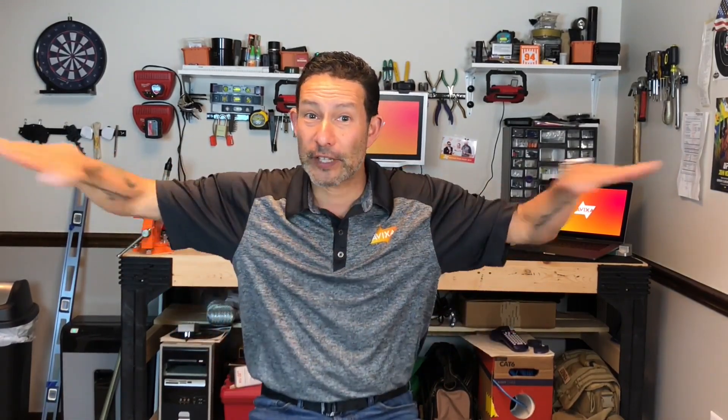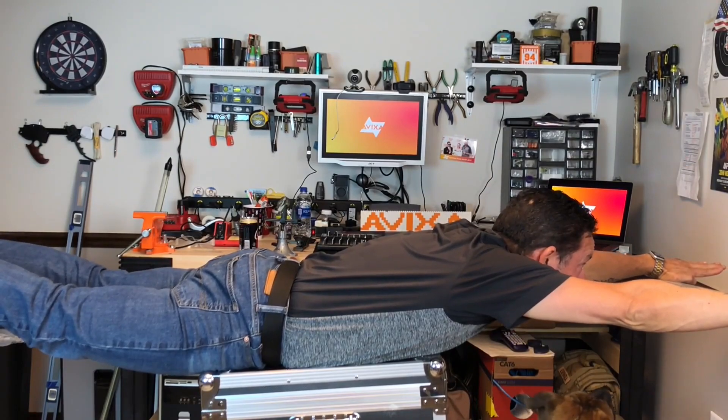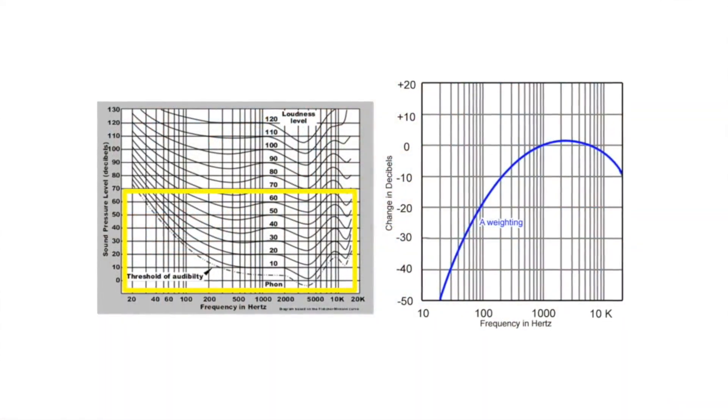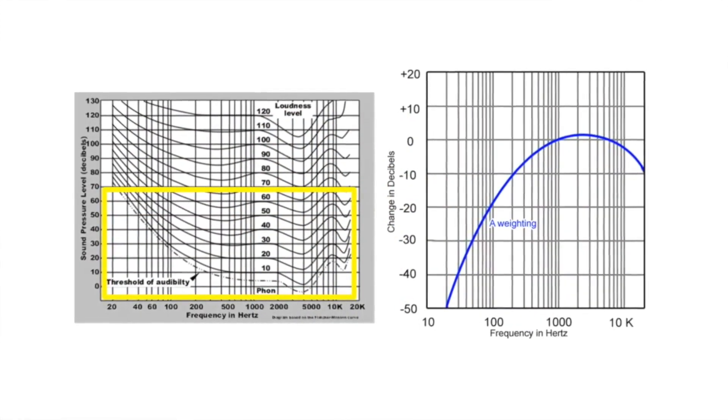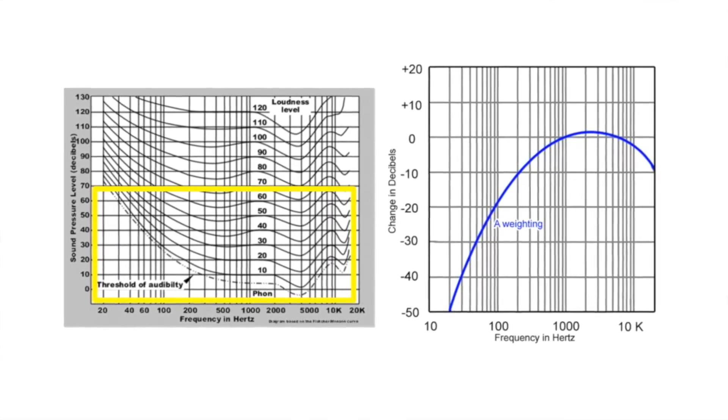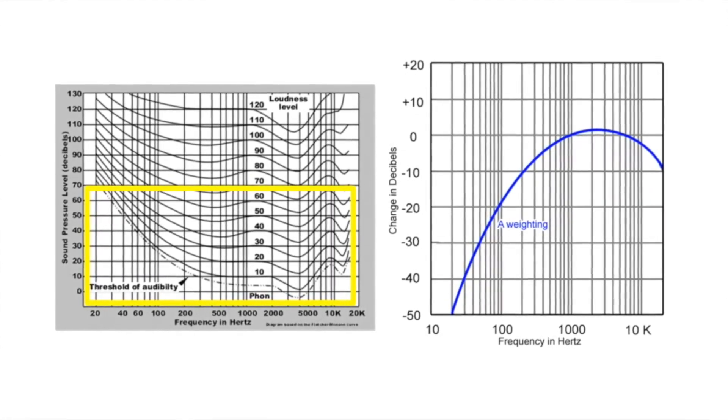The C weighting curve is flat. If you set the meter to no weighting, it will read out exactly how much energy is present with no adjustments and no curves. The A weighting is for lower volumes, such as speech reinforcement applications. If we look at the equal loudness contours for lower sound pressure levels, lower pitch sounds require a lot more sound pressure to seem as loud as sounds in the 1–5 kHz range. Beyond 7 kHz, high pitch frequencies also get harder to hear.